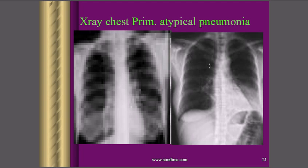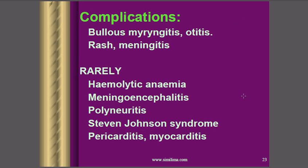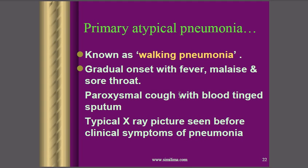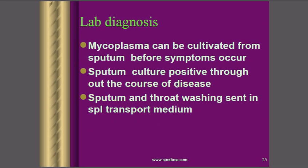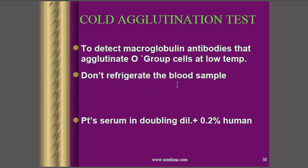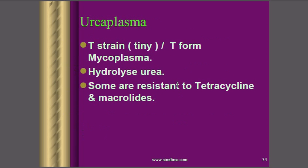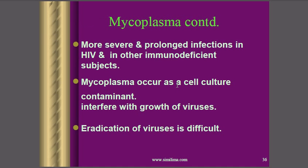An X-ray diagram is shown comparing a normal chest with one affected by this pneumonia, demonstrating how it affects the whole respiratory tract and lungs. This condition is called walking pneumonia. The symptoms include onset of fever, malaise, and sore throat.